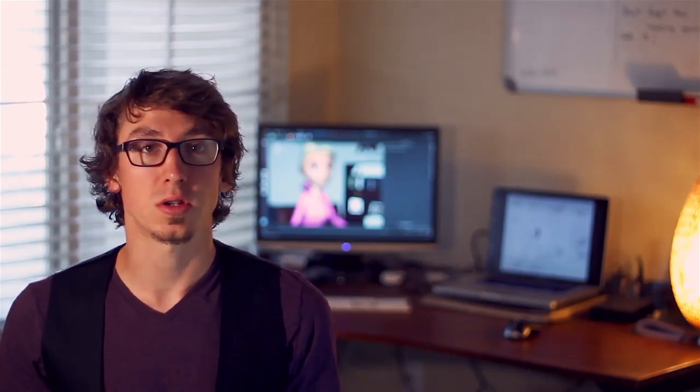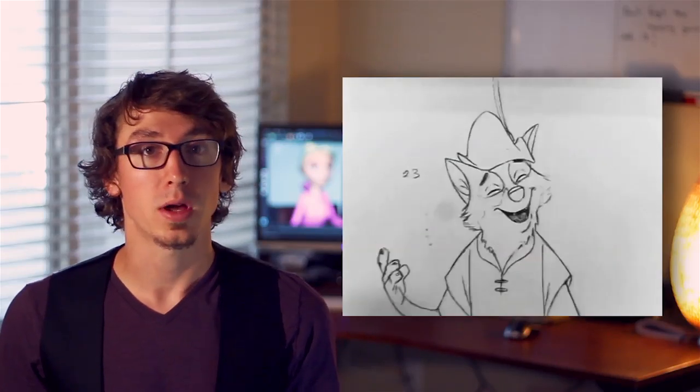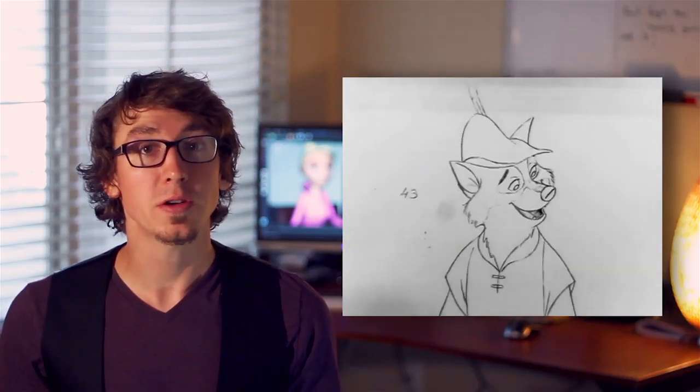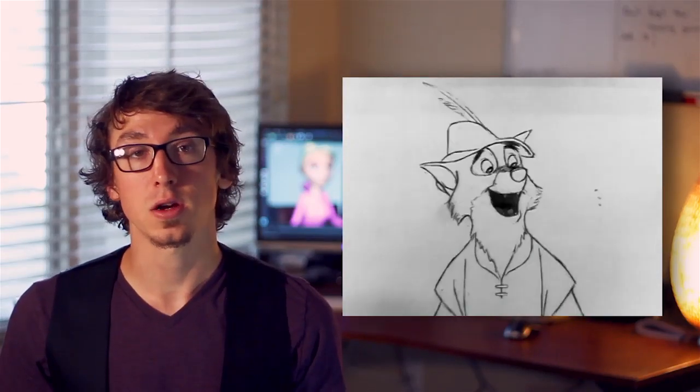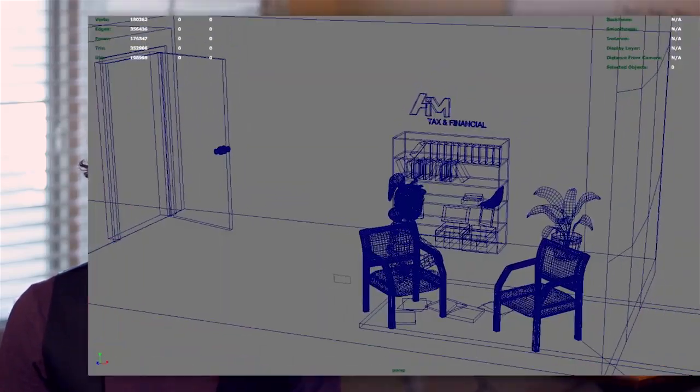Traditional animation is fairly simple to understand. Animators draw each frame with pencil on paper, and we watch 24 frames per second in the theater and see a moving image. A better comparison for 3D animation is stop motion — puppets are placed on sets and moved in tiny increments to record movement. Except in 3D, the puppets and sets are in a virtual world inside the computer.